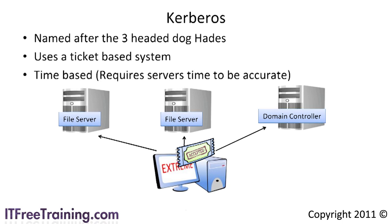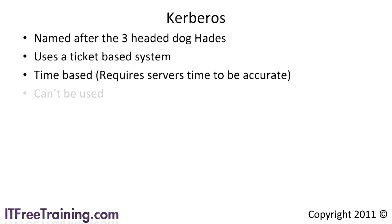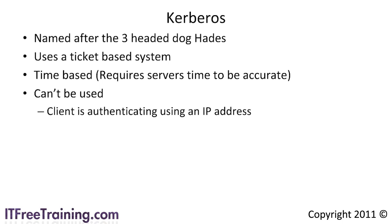Kerberos is time-based and tickets do expire after a certain amount of time. To use Kerberos effectively, all the time clocks on your servers have to be accurate. When you set up a domain, one of the domain controllers will generally have its internal clock synchronized to an external time source, and the other servers and clients will sync their time from a domain controller. When possible, you should use Kerberos. However, it cannot be used when the client is authenticated from an IP address, because Kerberos requires a trust relationship between the client and the domain. When authenticating using an IP address, the trust relationship cannot be verified.